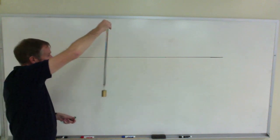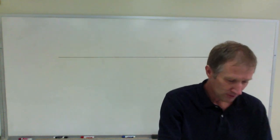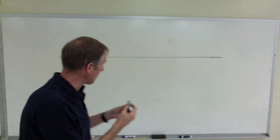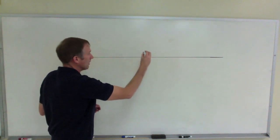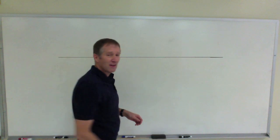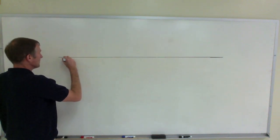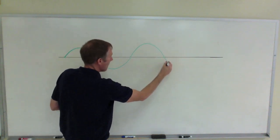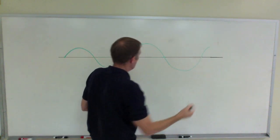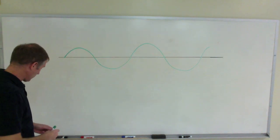What if I were to walk along as I did that, what that would produce, say I had a marker attached to that mass. As the marker, as I walked along, the marker would produce a nice sinusoidal wave. It would look something like this, and so on, right? So that's your basic sine wave.